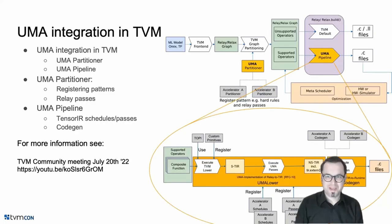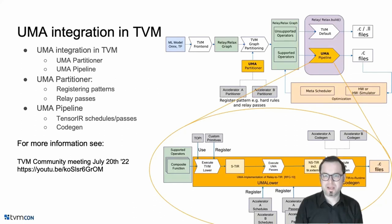Here you can see how UMA is integrated into TVM. It consists of two major parts: the UMA partitioner and the UMA pipeline. Those two parts provide all the amazing functionality that TVM has in a condensed API tailored to accelerator integration, from relay pattern matching to TensorIR to CodeGen and many more.